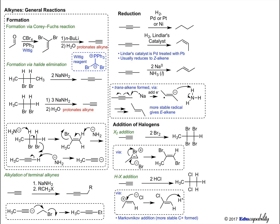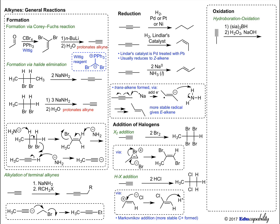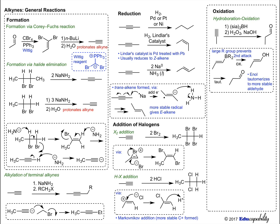Terminal alkynes can be converted to aldehydes or ketones selectively with appropriate reagent choice. Hydroboration-oxidation, a two-stage process where the alkyne is first treated with a boron reagent then oxidized, produces an aldehyde. The boron reagent adds to the least hindered side — the terminus of the alkyne. The large boron reagent prevents attack on the intermediate, and the oxidation step gives an enol, which tautomerizes to the more stable ketone.